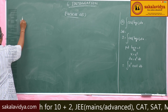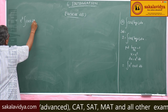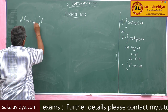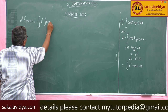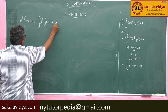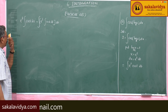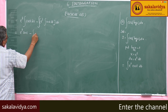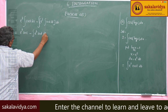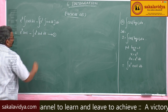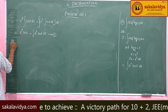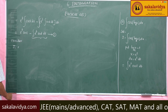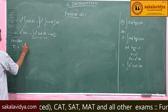Applying integration by parts: e^t times the integral of cos(t) dt minus the integral of [derivative of e^t times integral of cos(t)] dt — this is equation 1. We need to find the resulting integral; call it I₁ = the integral of e^t sin(t) dt.